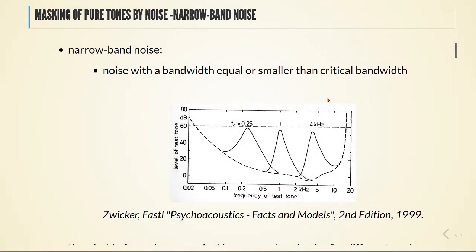Narrow-band noise is a noise with a bandwidth equal or smaller than critical bandwidth, about 100 Hz below and 0.2 times frequency above 500 Hz.